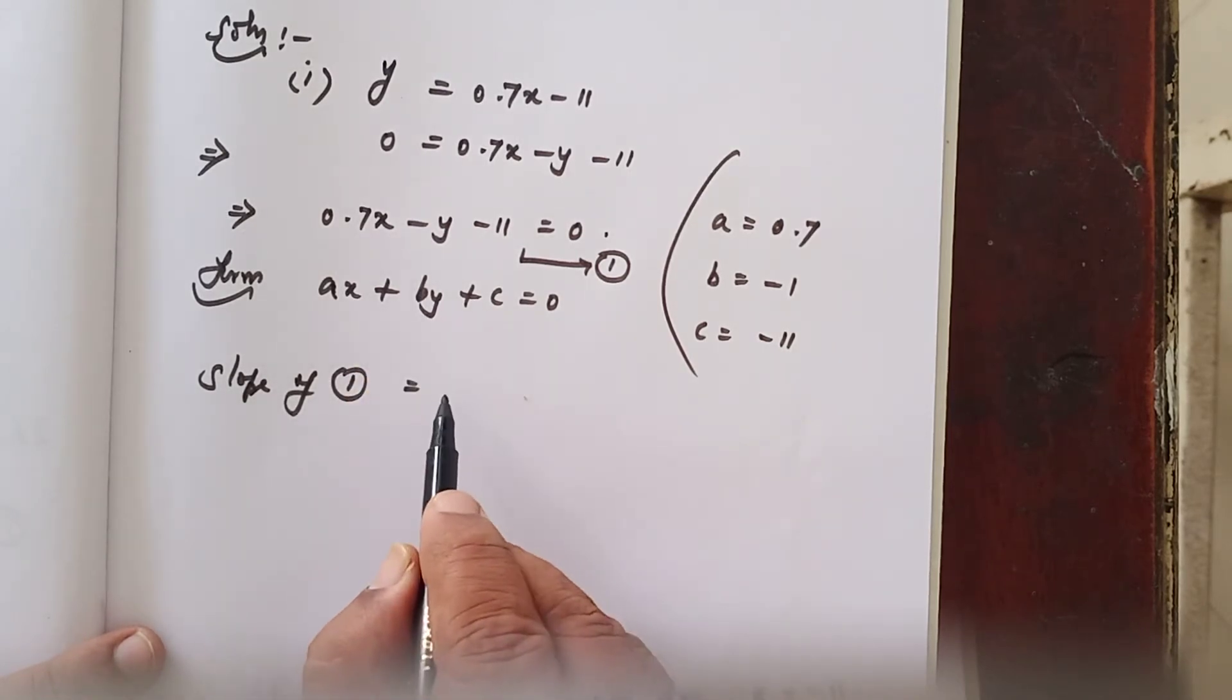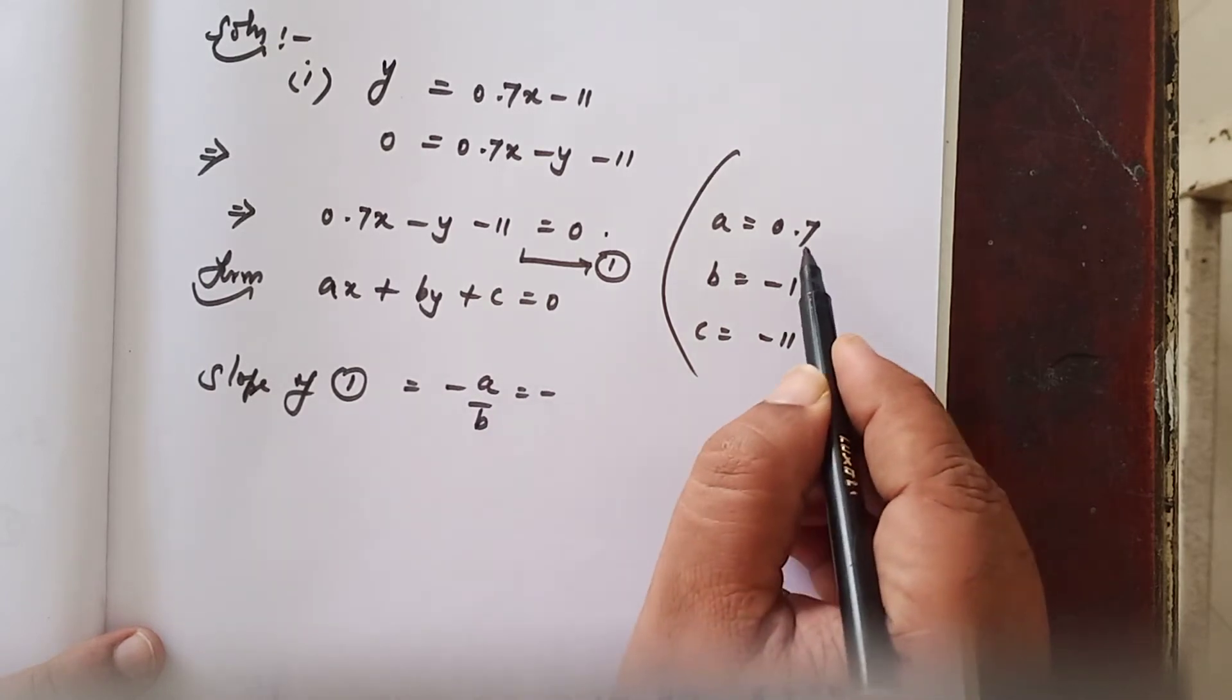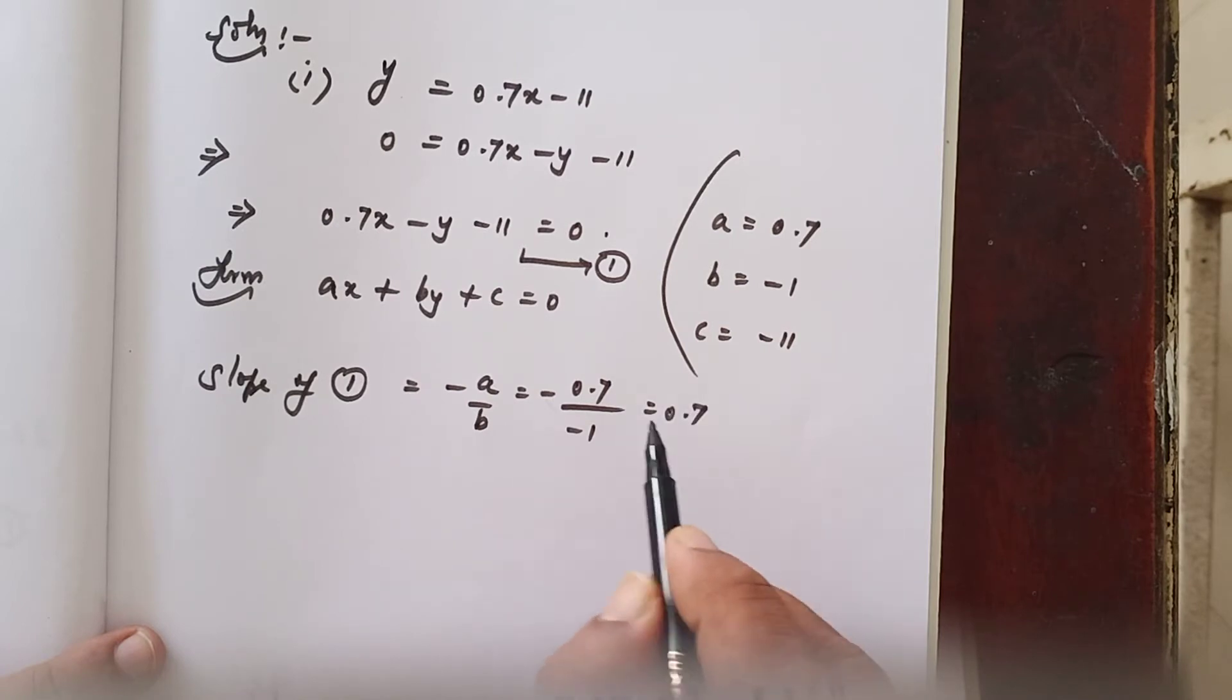If you are given equation formula minus A by B, minus A value that is 0.7 divided by B that is minus 1. Both minus get cancelled, 0.7 by 1 equals 0.7.